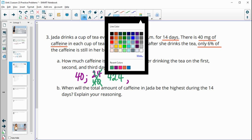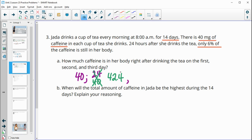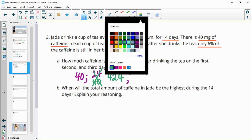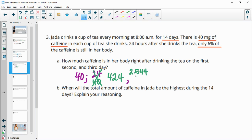So if we add those together on the second day, she'll have a total of 42.4 milligrams of caffeine. Then on the third day, she's going to have 6% of this. So do 6% of 42.4. So multiply 42.4 times 0.06, and you'll get 2.544 milligrams left in her body. Plus then she's going to drink another cup of tea that has another 40 milligrams. So on the third day, she's going to have a total of 42.544 milligrams of caffeine in her body.